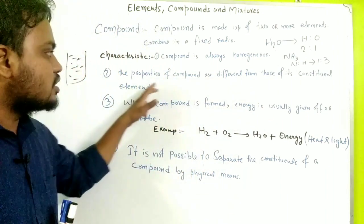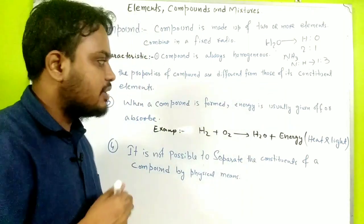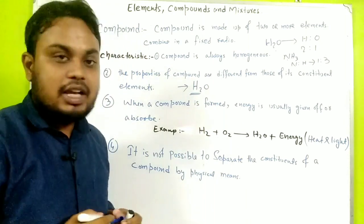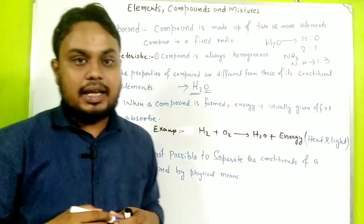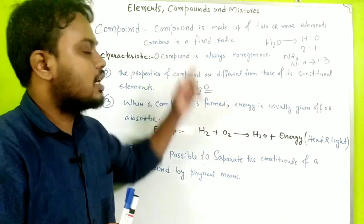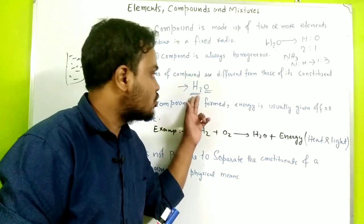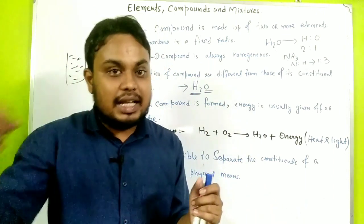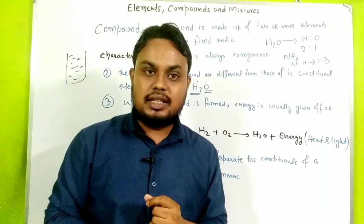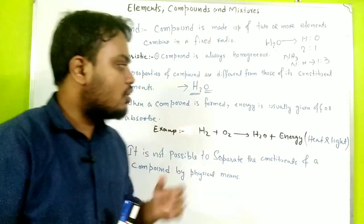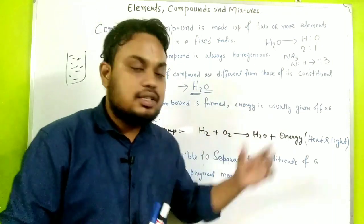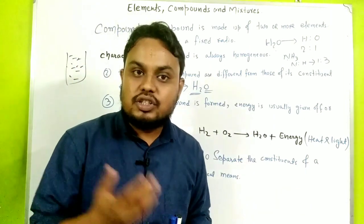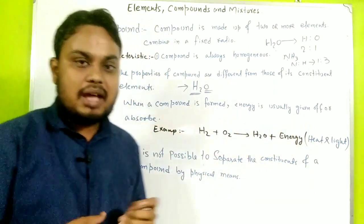The second characteristic is that the properties of a compound are different from those of its constituent elements. For example, hydrogen and oxygen each have their own properties, but water has different properties from either of them. Also, when a compound is formed, energy is either released or absorbed.